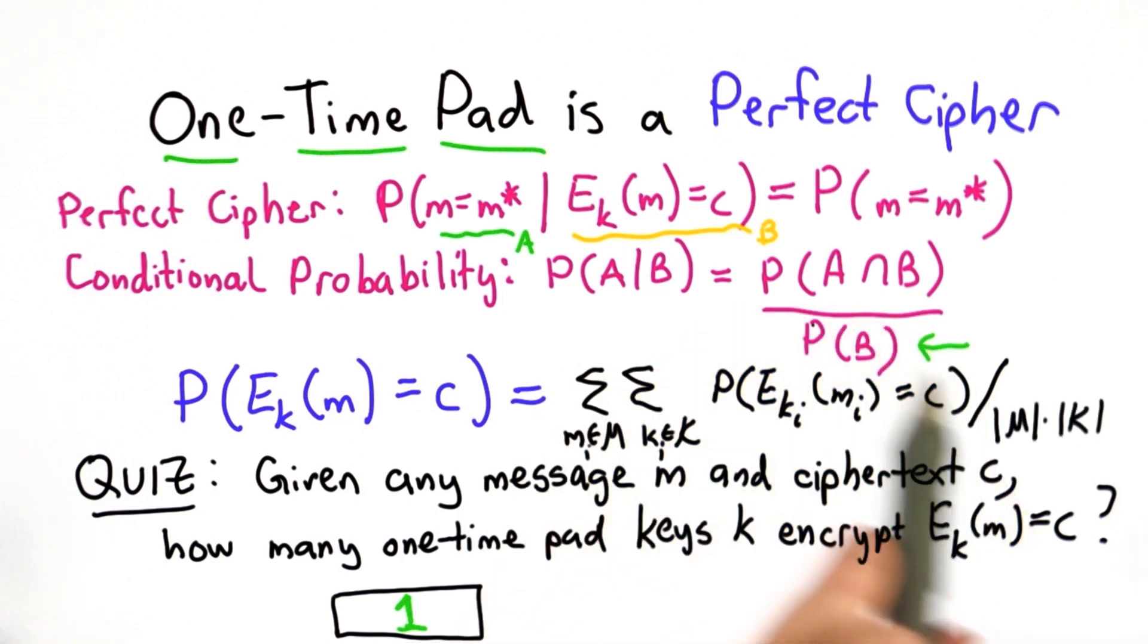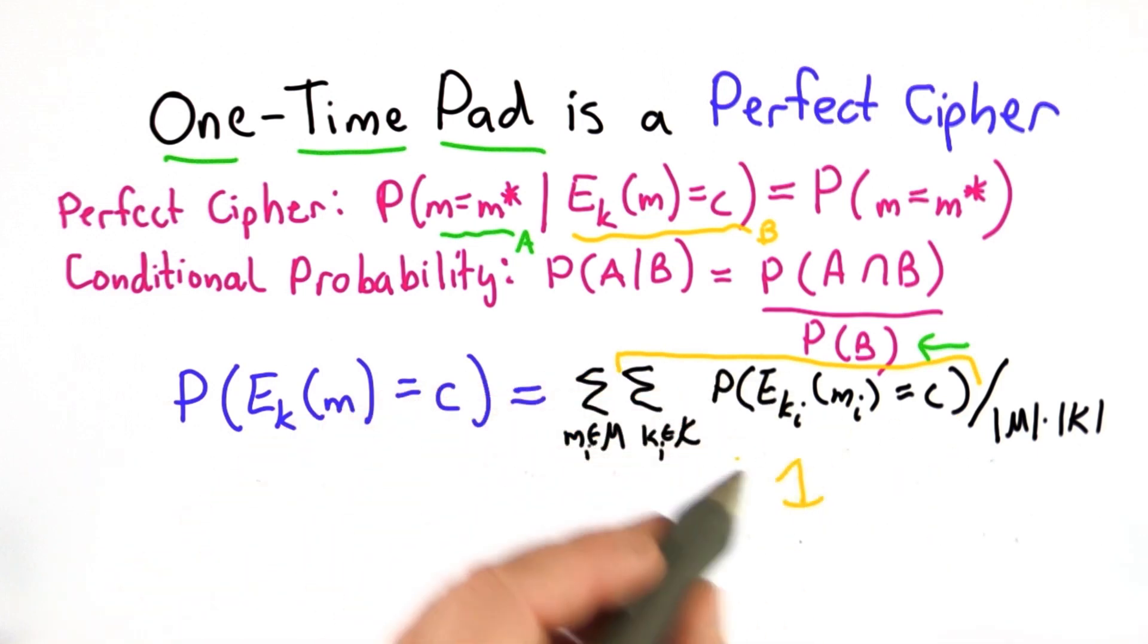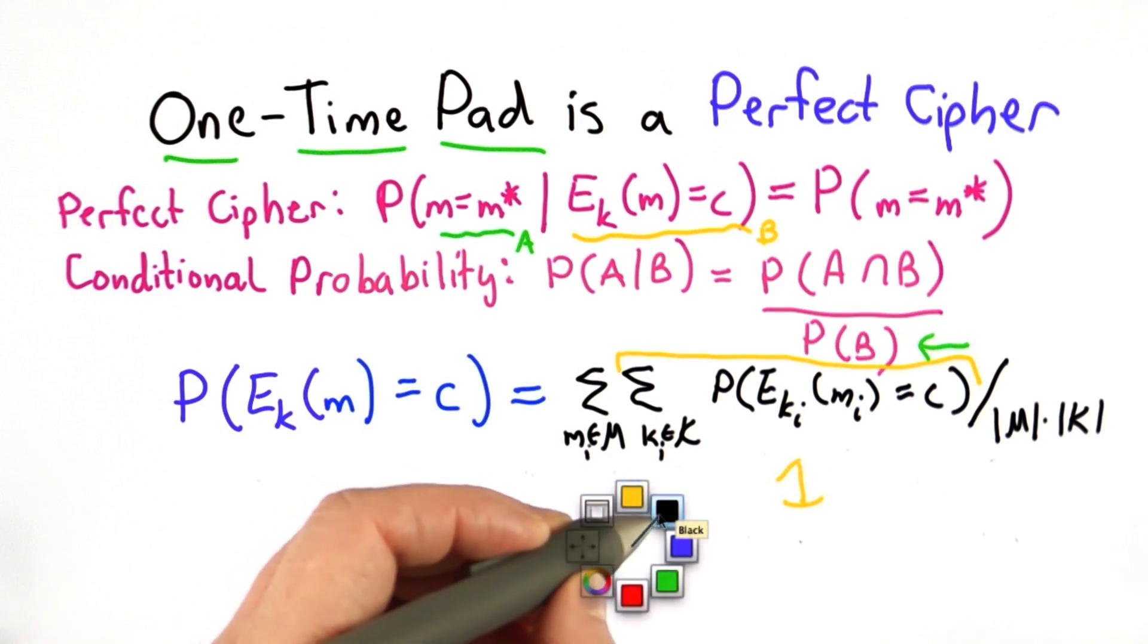So now, what's the value of the summation? We know for a given message, there's exactly one key that maps to that ciphertext. So this is 1, and we're summing over all the messages, summing the value of 1.